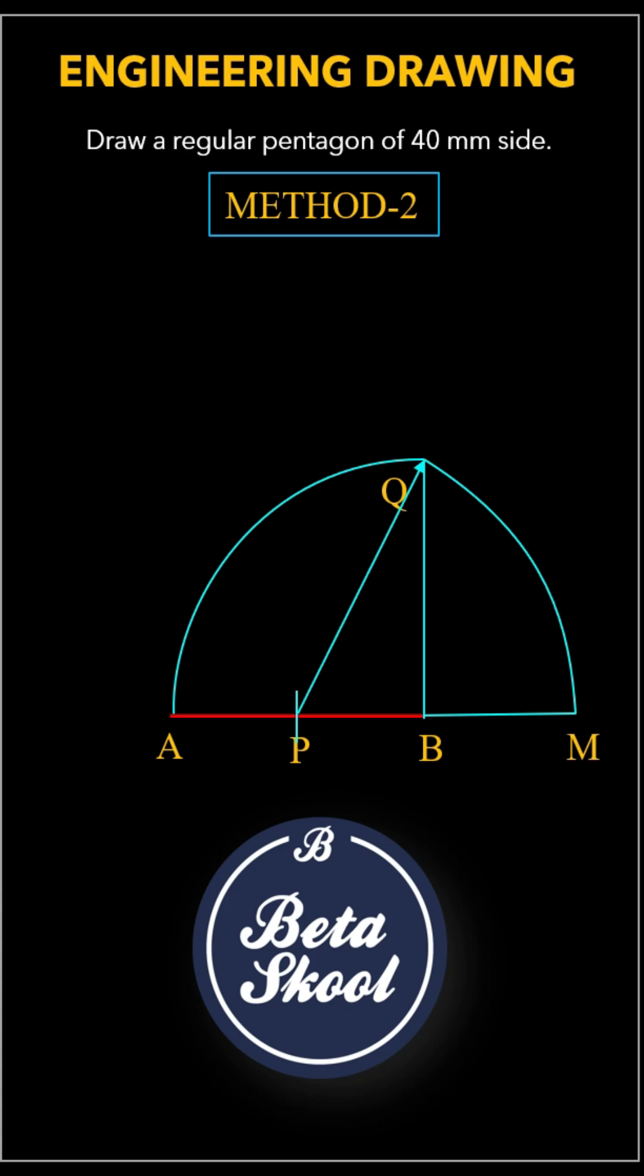Now, with your compass centered at B and radius AB, draw an arc. Then, center your compass at P with radius equal to AM, and draw another arc. Where the two arcs intersect, mark that point as C. Join BC.